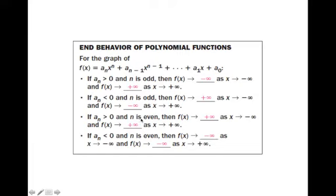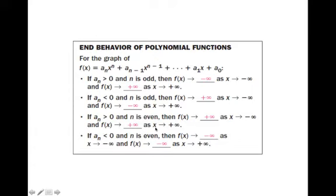When n is even — so the degree is something like 2, 4, 6, or 8 — both ends go in the same direction. If the leading coefficient is positive, both ends go up. So f(x) goes to positive infinity as x goes to negative infinity (up to the far left), and f(x) goes to positive infinity as x goes to positive infinity (up to the far right). This is just like a quadratic with a positive coefficient — those parabolas look like they're smiling at you with both ends going up.